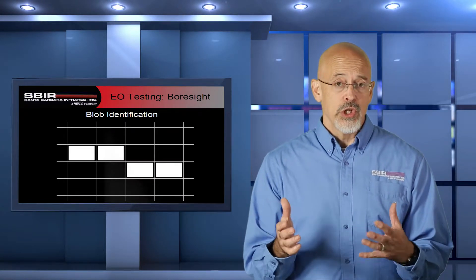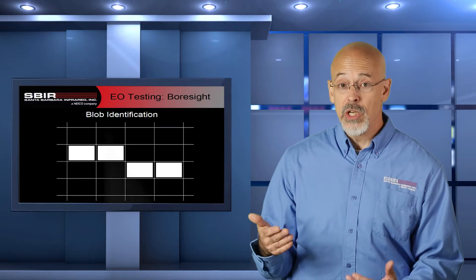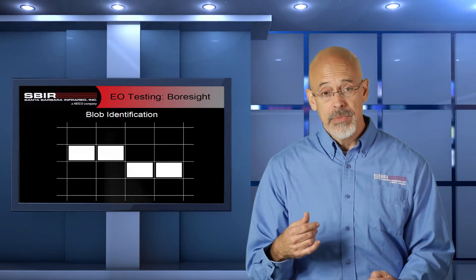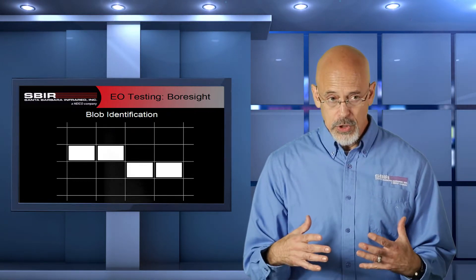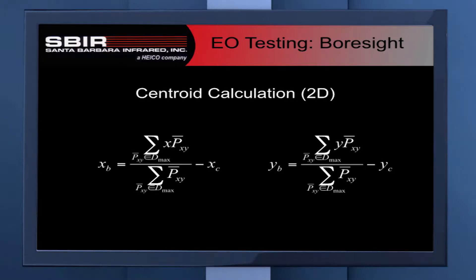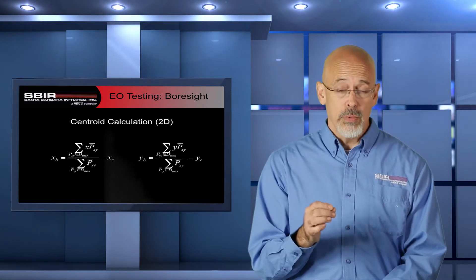Once we have all those pixels, we determine which ones are connected. We are looking for a cluster of pixels — all those that are touching together into one unit. For a blob analysis, we include diagonal connectivity, so in this image you're seeing one blob: these four pixels together in one cluster. Once we have those pixels in our blob — typically the largest blob in our field of view — we run a centroid analysis. This is a weighted average, the weighting being the value of the pixel, calculated in both the x and y axis to determine the center point, usually to a sub-pixel level, of that spot.